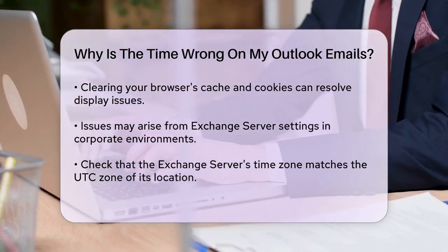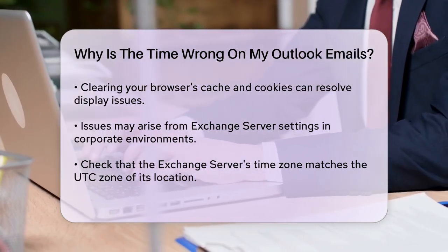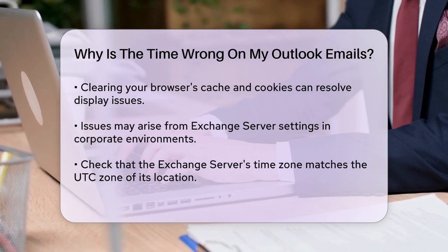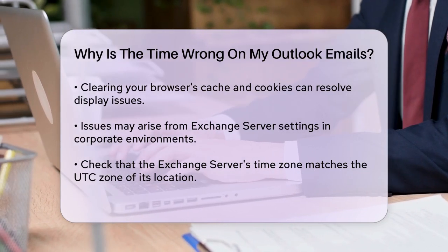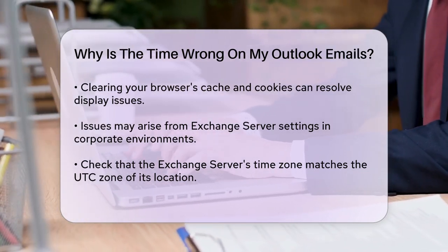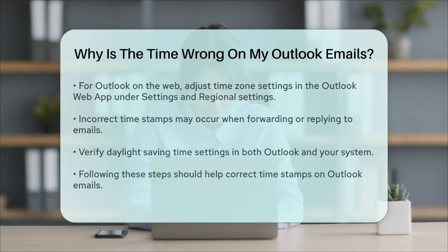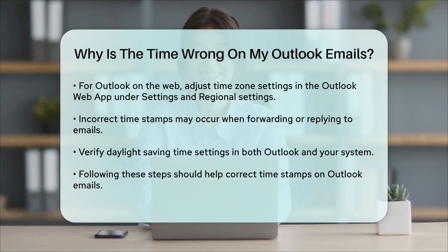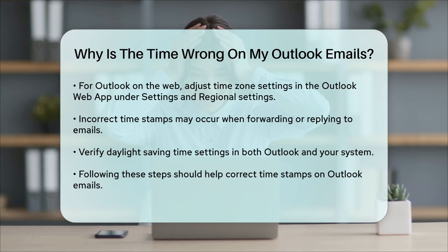Additionally, if you're using Outlook on the web, you need to set the time zone in the Outlook Web App. Log on to Outlook Web App, go to Settings, then Options, and select Regional Settings. Here, you can choose the correct time zone to ensure that the times on your emails are accurate.